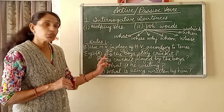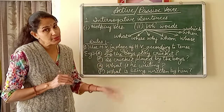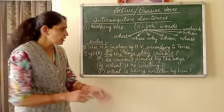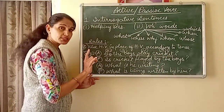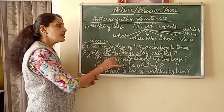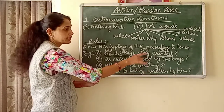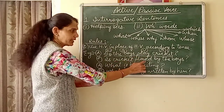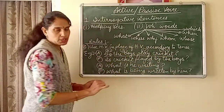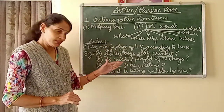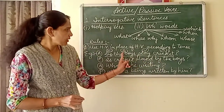Now change the subject to object and object to subject. The helping word changes because it is a question sentence. When we change to present tense passive, the new subject 'cricket' is singular, so the helping word is 'is'. The passive form becomes: 'Is cricket played by the boys?' — helping word, object as new subject, third form of verb, 'by' the original subject, and question mark.